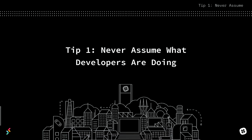Let's talk about four tips for designing APIs for growing and evolving products. Tip number one: never assume what developers are doing. Now, you might think this is a really basic tip, but I want to tell you a little bit of a story about how we made an assumption that we didn't even realize was an assumption until something went wrong.